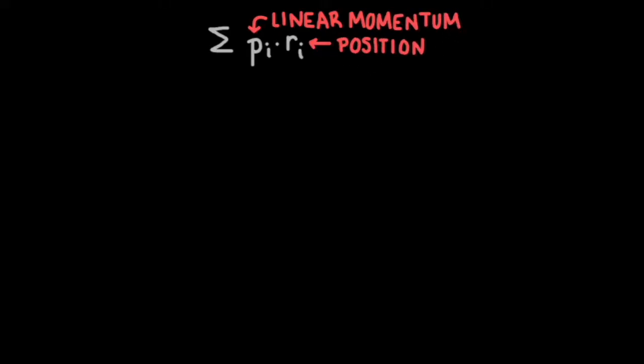Well, let's start by considering the product of linear momentum and the position vector of a particle. If we take the sum of all particles in a system, we get the sum of pi times ri. For brevity's sake, let's call this quantity q.